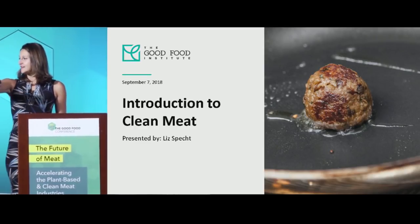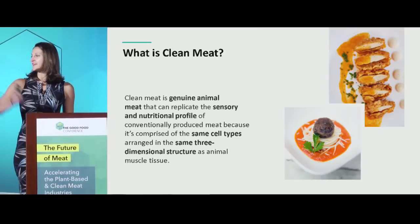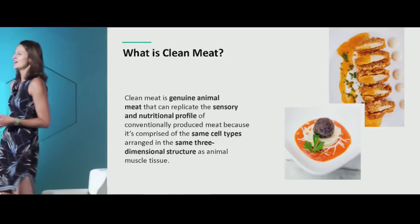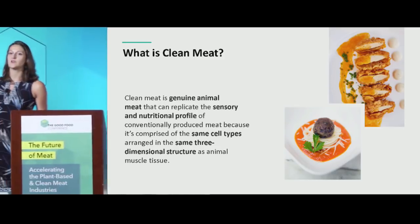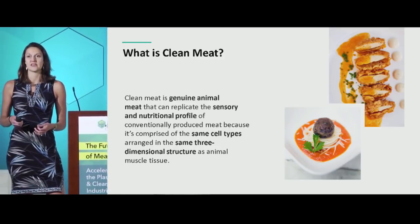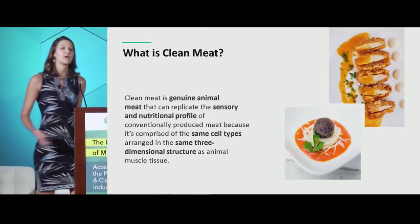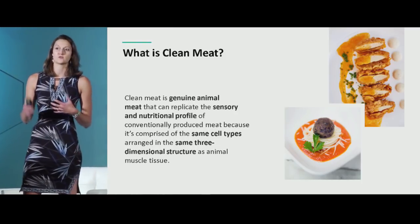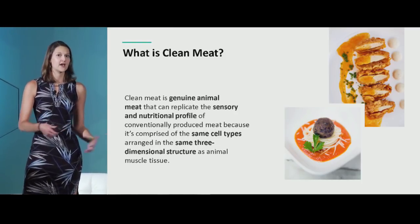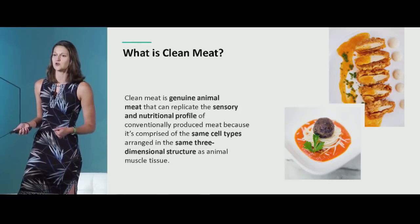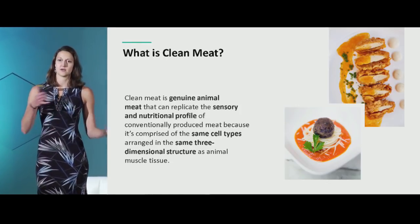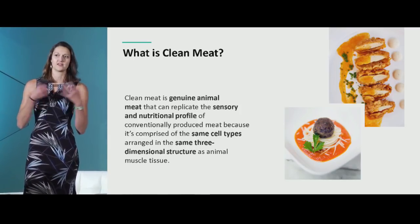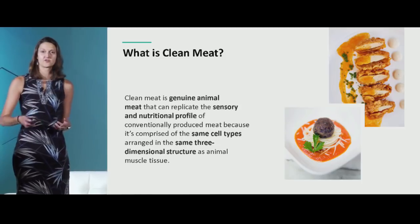So what is clean meat? When we say clean meat, we're talking about genuine animal meat — all of the sensory aspects, the consumer experience of conventional meat — but made by growing the relevant cell types: muscle cells, fat cells, connective tissue in culture, and arranging them in the same spatial structure that gives us the mouth feel and true consumer sensory experience we expect from meat.